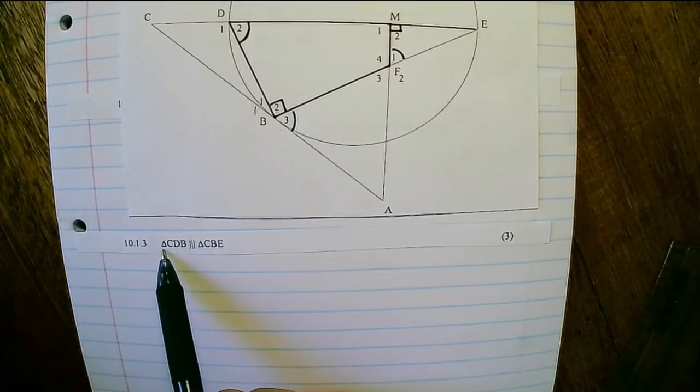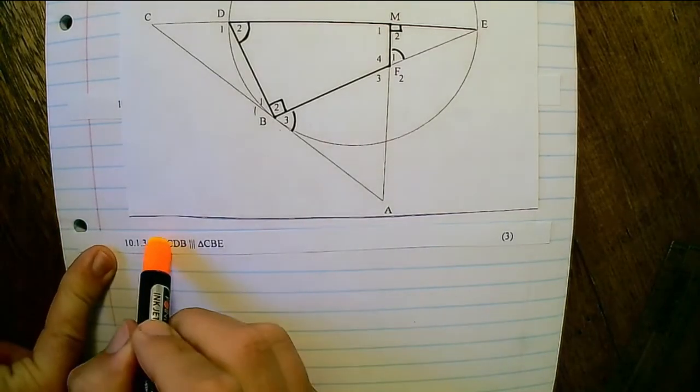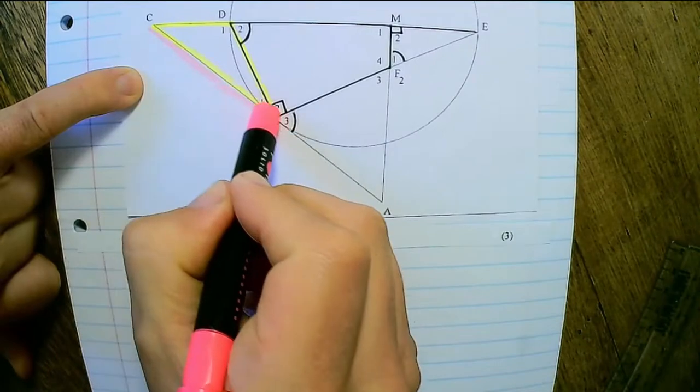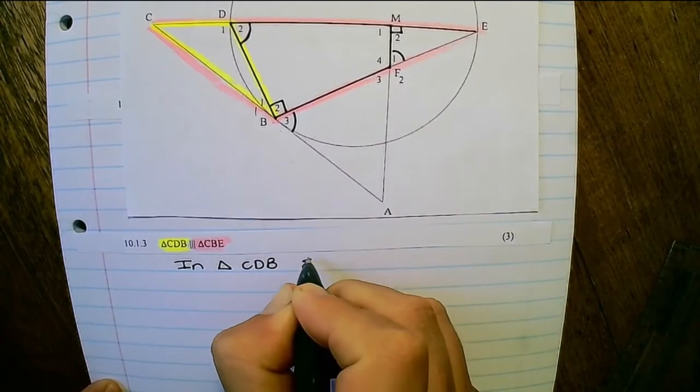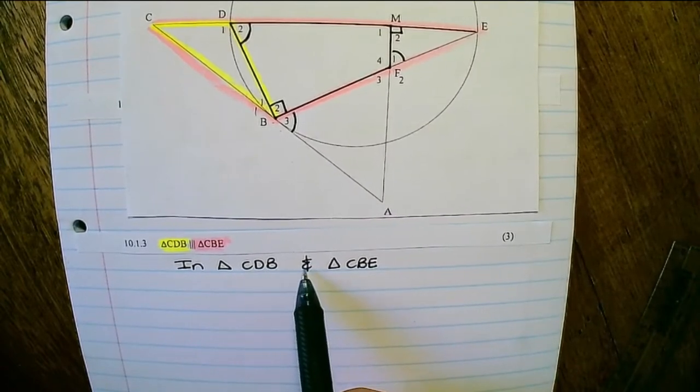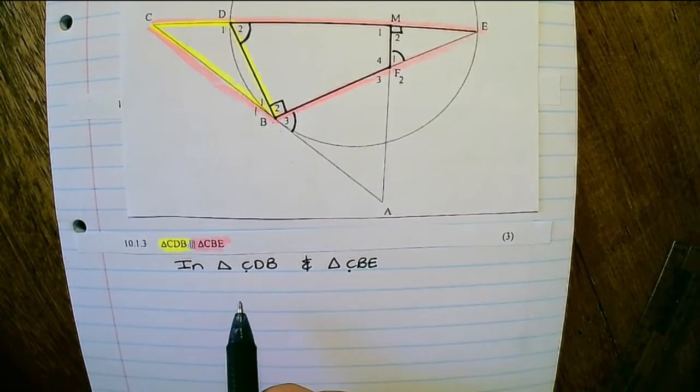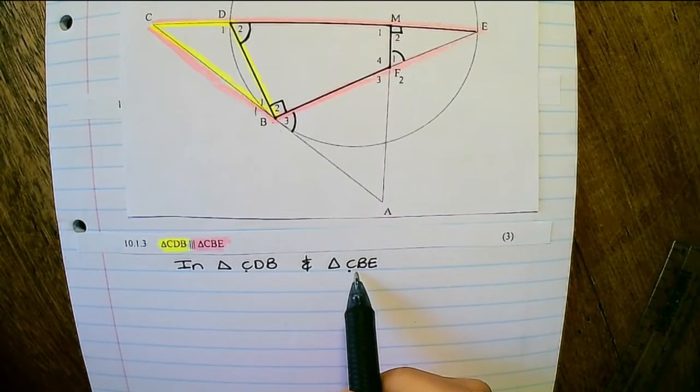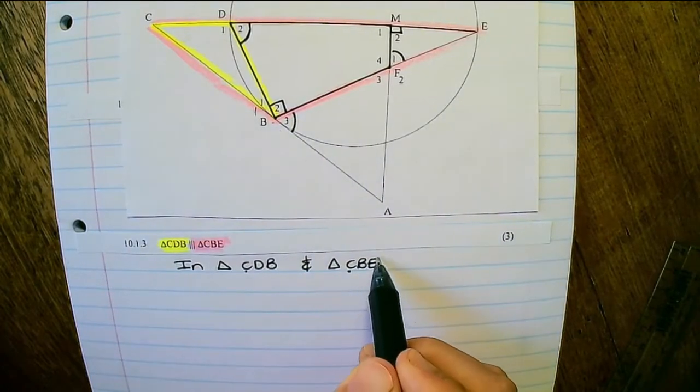Next we want to prove that triangle CDB is similar to triangle CBE. So let's highlight those two triangles. So it is CDB and the other triangle is CBE. So how I would write this, I would say in triangle CDB and triangle CBE. Now the way they present this shows us which angles are already matched up. So I can see angle C and angle C in both triangles would be equal. And then D in the smaller triangle, which represents D1, would be equal to angle B in the bigger triangle. And lastly angle B in the smaller triangle, which is B1, would be equal to angle E in the bigger triangle.